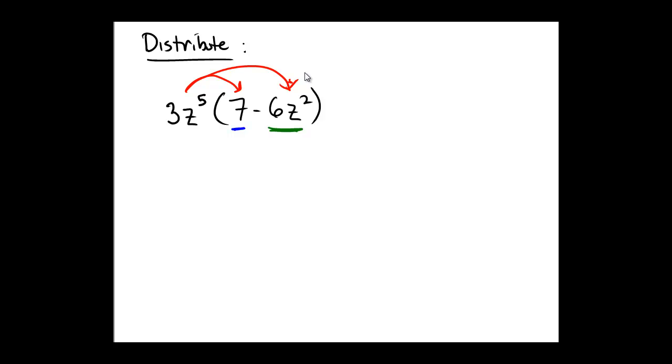Okay, so for the first part, we're going to take the part that's out in front, the 3z to the 5th, and then we're going to multiply that by the object that is underlined in blue, and that's 7.